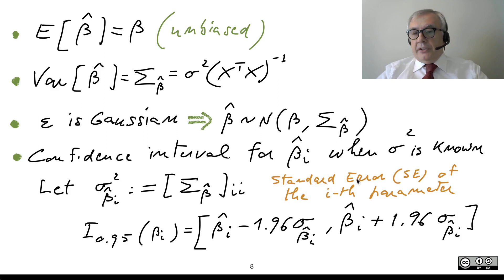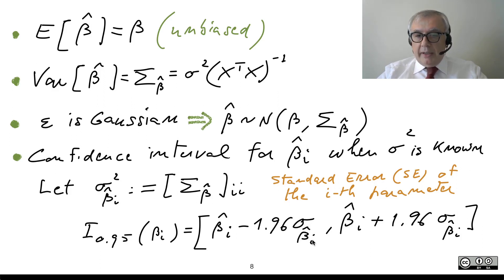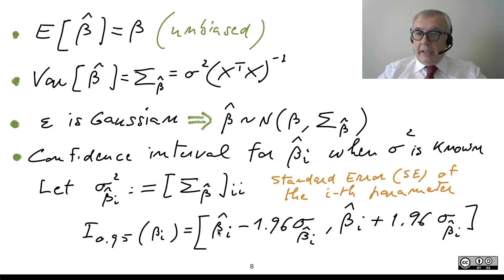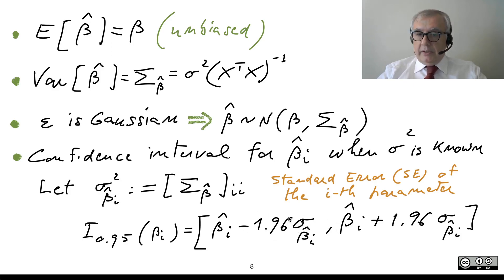Beta-hat-i is an estimated parameter, therefore its standard deviation is a standard error — in this case, sigma-beta-hat-i. Given all this, in view of the normality of beta-hat, it is easy to write a 95% confidence interval. The 95% confidence interval is given by the point estimate minus 1.96 times the standard error as the lower limit, and beta-hat-i plus 1.96 times sigma-beta-hat-i as the upper limit.